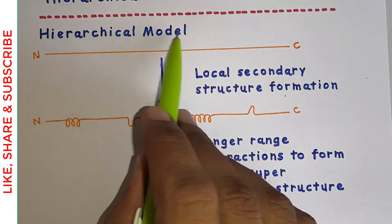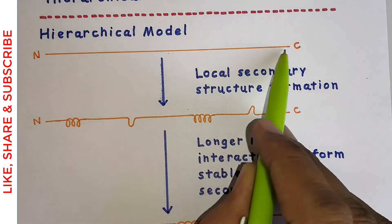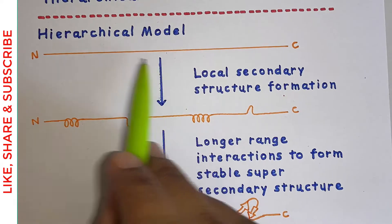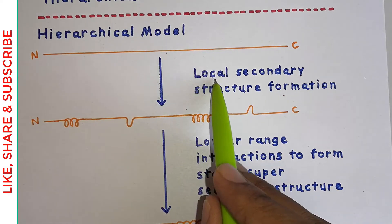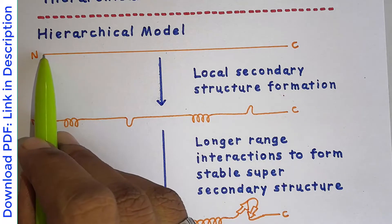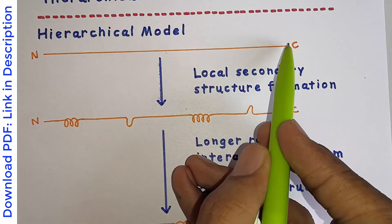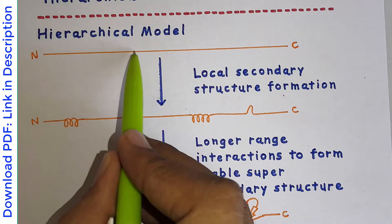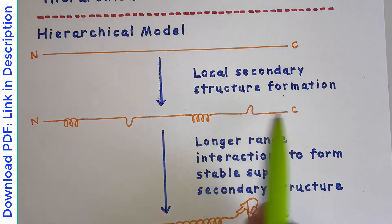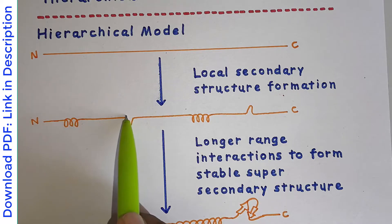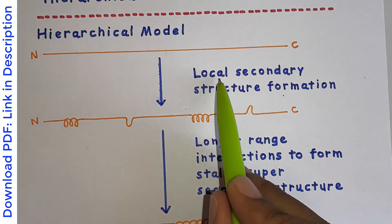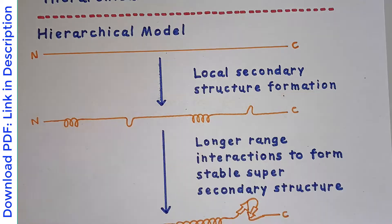To understand the hierarchical model, suppose this is the polypeptide chain with an N-terminal and a C-terminal. In the first step, there is local secondary structure formation. Instead of the full polypeptide chain undergoing secondary structure formation all at once, only some local parts start making secondary structure, as seen in this diagram — this part, this part, and this part have formed secondary structure.